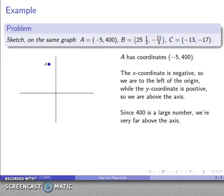So my quick sketch of that location, eh, something like this. So I'm back some distance, a small distance, and I'm up a very large distance, and so there's a rough sketch of where the point negative 5, 400 is going to be.